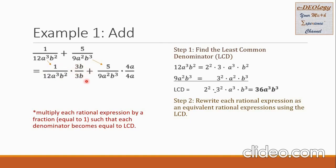For the second rational expression, we want the denominator to equal the LCD. The 9 should be multiplied by 4 to get 36. The a squared needs to be multiplied by a to become a cubed. The b cubed already matches the LCD, so there is no issue. We need to multiply the denominator by 4a to equal the LCD, and this 4a is copied in the numerator. So our second rational expression is multiplied by 4a over 4a, which equals 1 and does not change the value of the fraction.